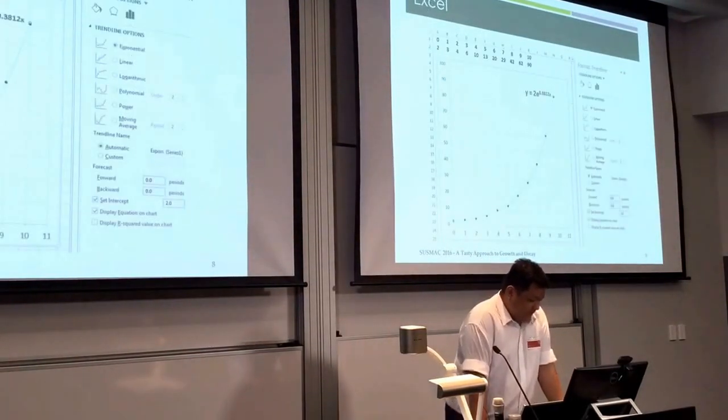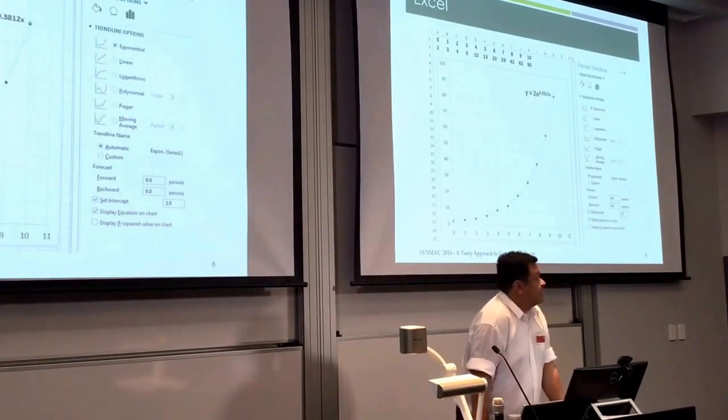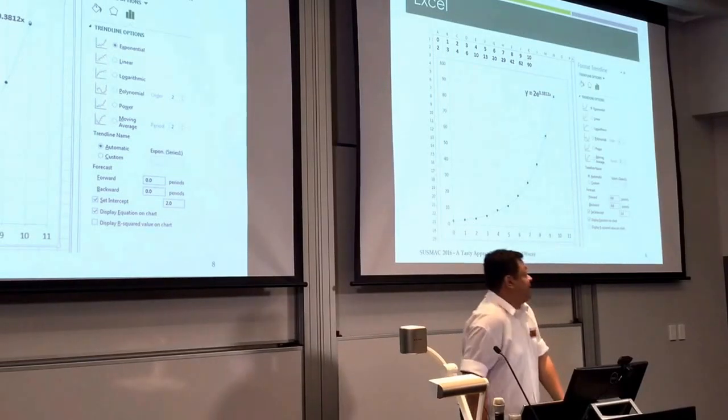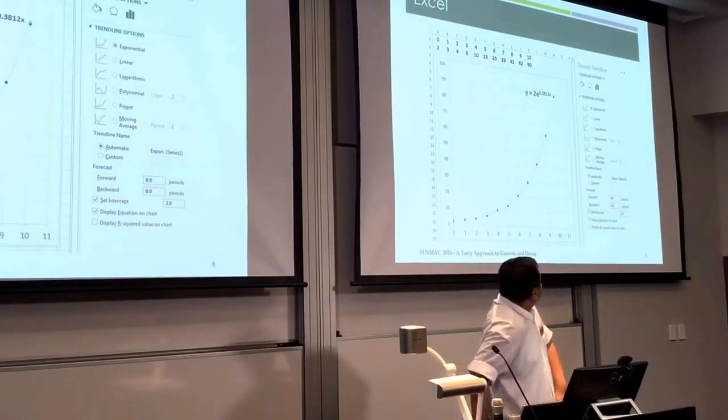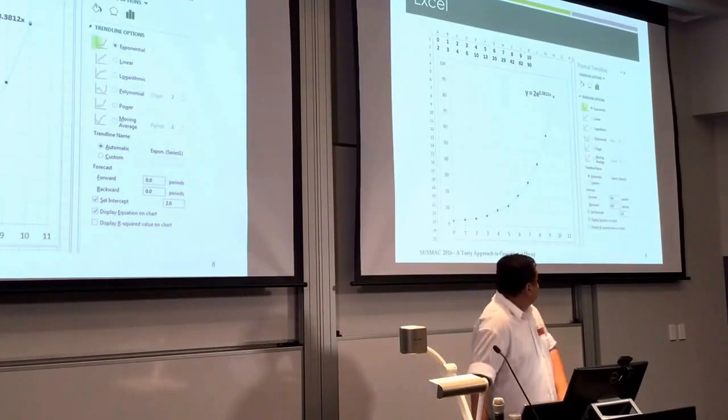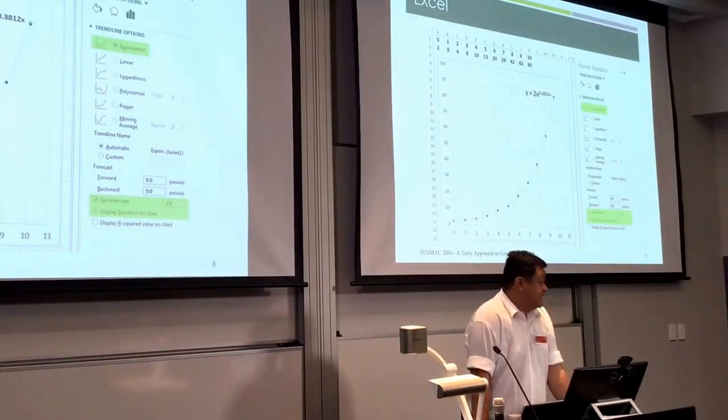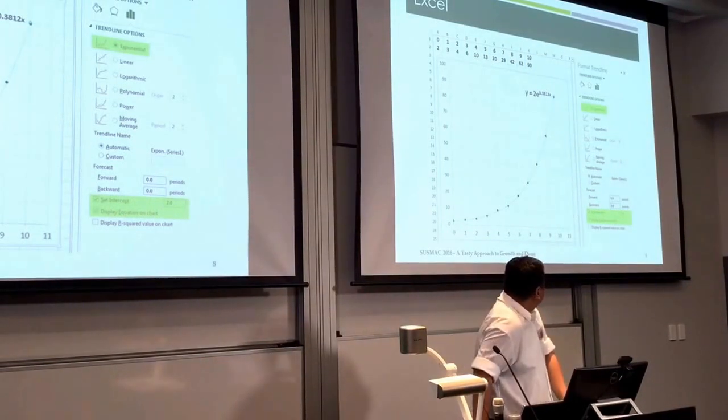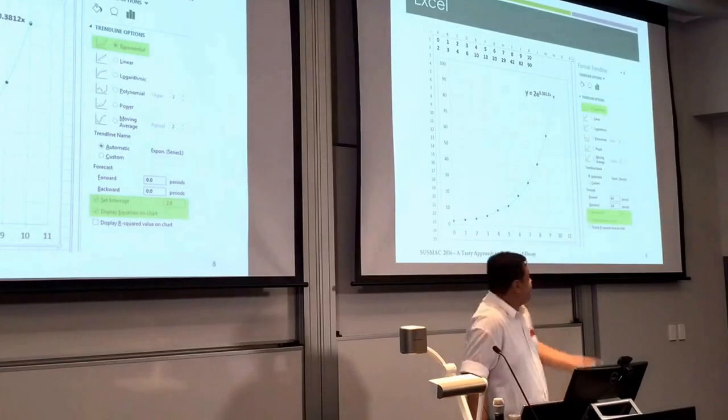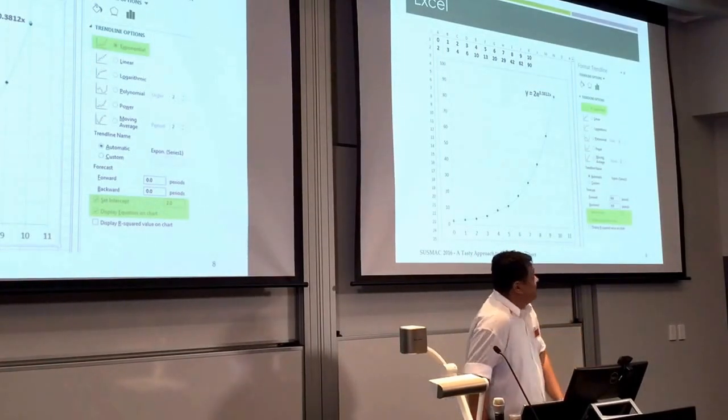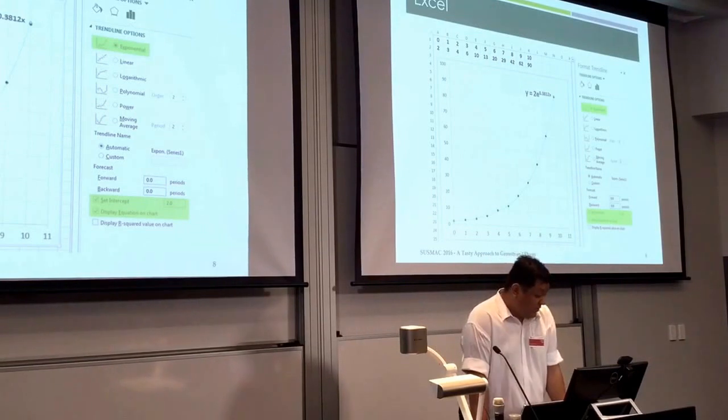But of course you can put the data into Excel, get yourself a scatter plot, add yourself a line of best fit that's curved, making sure you select the exponential line of best fit, setting your intercept to 2 just to start it with 2 M&Ms on the plate. And when you display the equation on the chart you can see there 2e to the 0.3812x. That's really not that bad compared to the equation we got before.